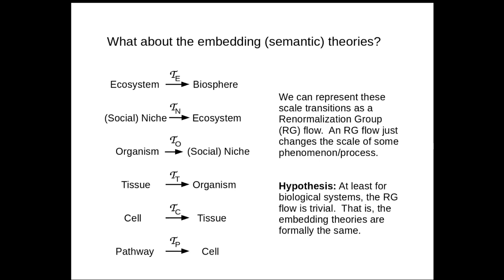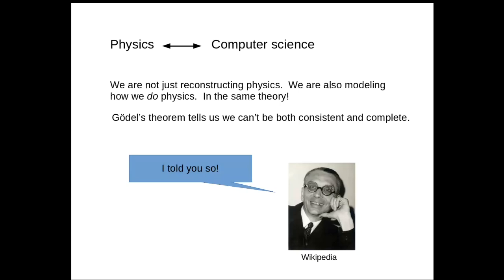We've done something really important here: we've linked physics to computer science, not by reconstructing a God's eye view, but by constructing physics from the point of view of an embedded agent in a way that looks like computer science. This immediately raises the problem of self-reference. Under very general assumptions, we know where that gets you — Gödel's theorem — which warns us that this theory is going to end up not being both consistent and complete.